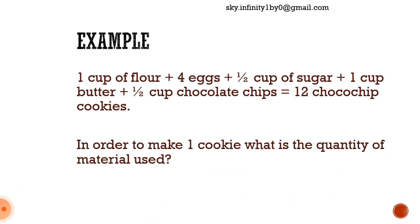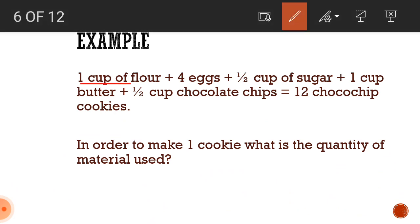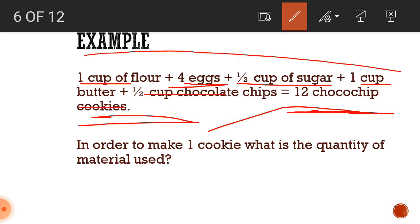Let's take the example of chocolate chip cookies. We all love chocolate chip cookies. So, for example, take one cup of flour, four eggs, half a cup of sugar, one cup of butter and half a cup of chocolate chips in order to make 12 chocolate chip cookies. Suppose I only want to make one cookie. Then, what is the amount of all these ingredients required?